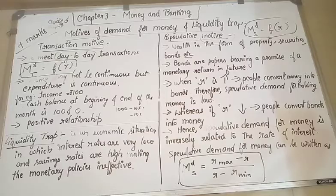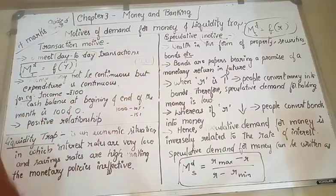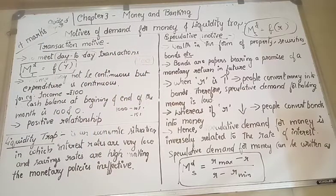So the demand for money under transaction motive is a function of Y, a function of income. See, my day-to-day transactions, I have to carry on. So where will I get this money from? The money I will get only if I do a job or if I am in a business. So this job or business is going to give me money. It may be weekly wages or it may be monthly salary. Let us assume my salary for a month is hundred rupees. Hundred rupees is a person's salary.